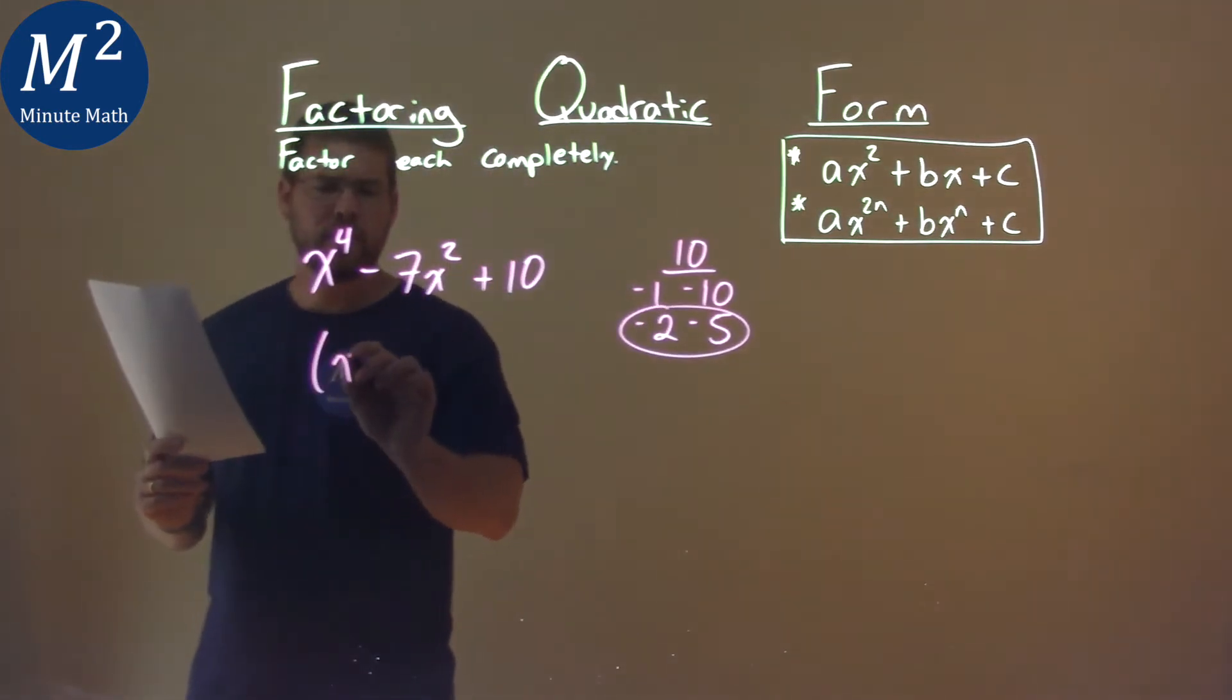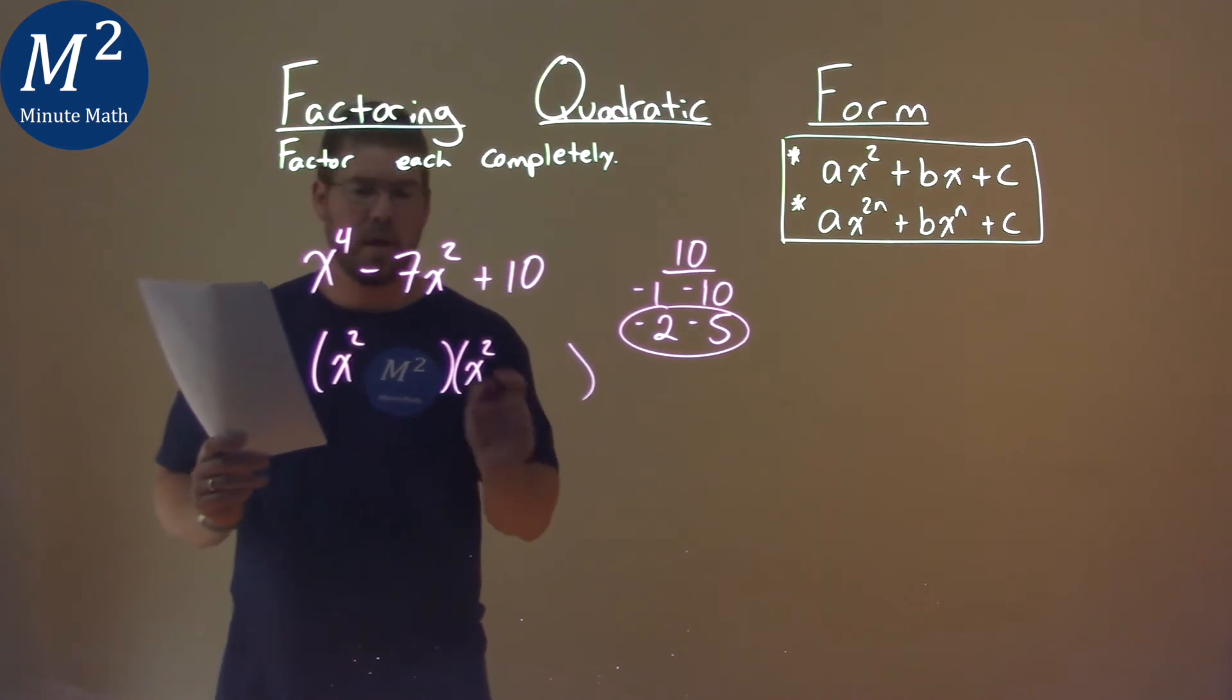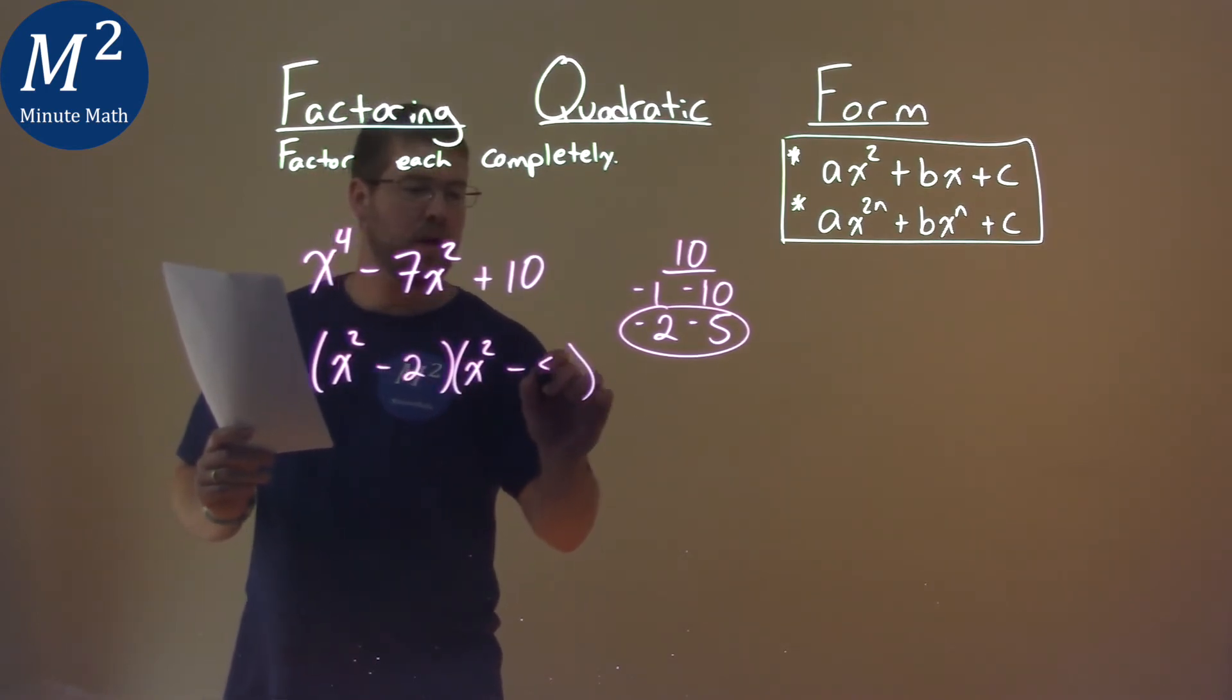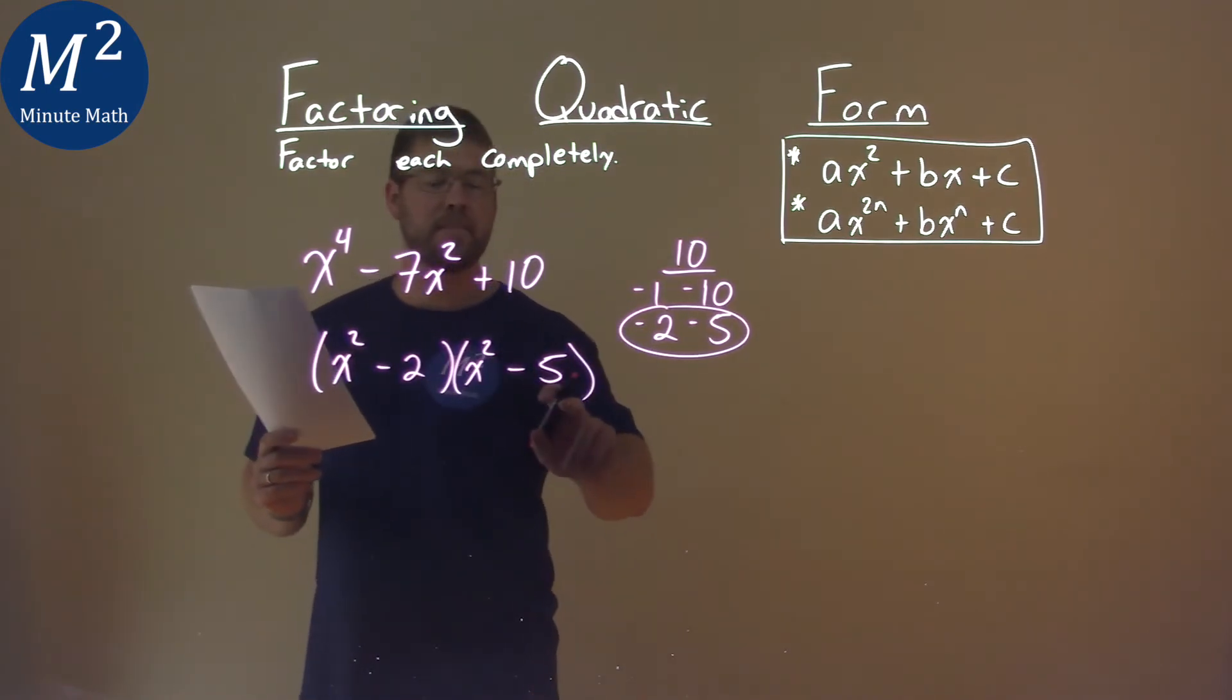So we use our form, x squared here times an x squared. And that's because x squared times x squared is x to the fourth. Minus 2 minus 5. Well, negative 2 times negative 5 is a positive 10, but when we add them we get a negative 7.